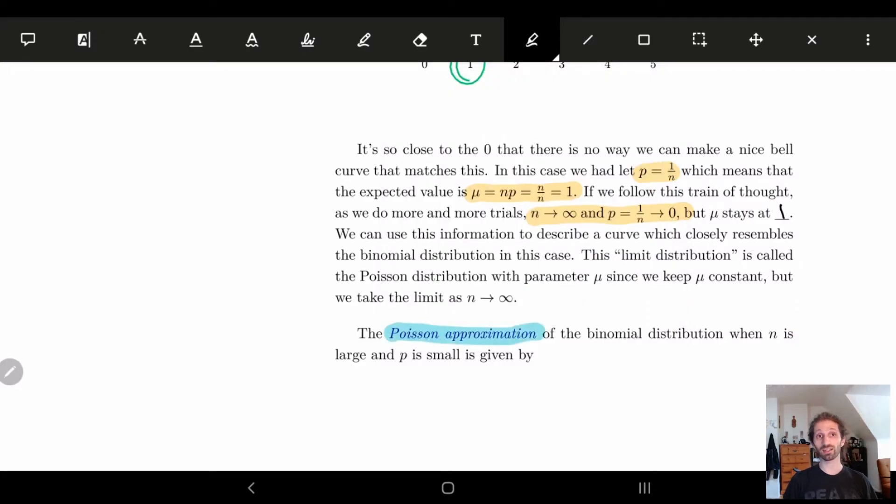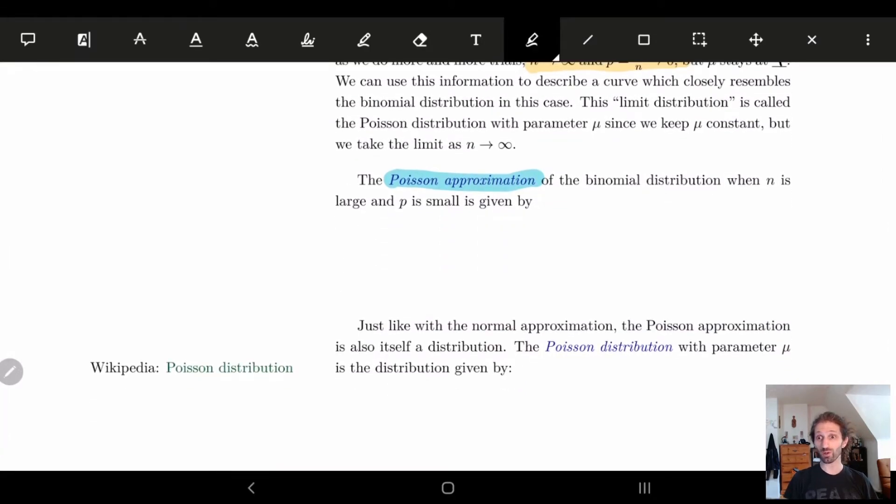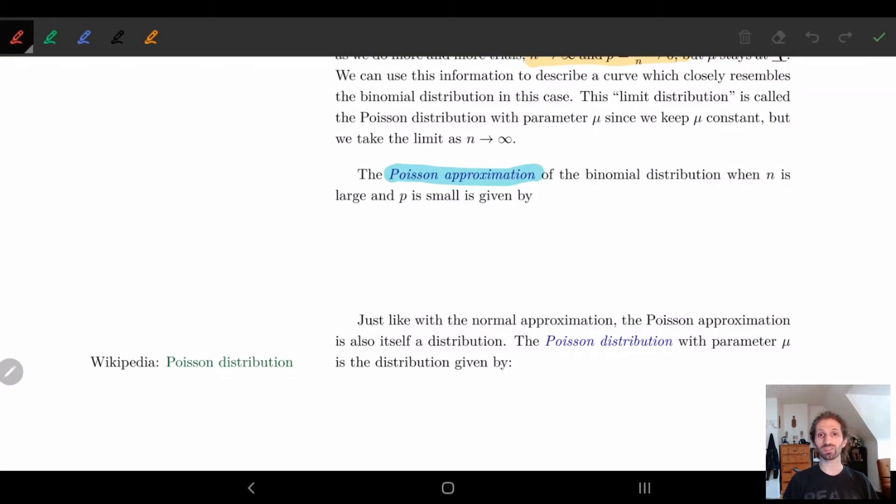Poisson approximation is not named after the fish, it is named after a person whose surname is Poisson. As we noticed from one class, surnames in mathematics are very exciting.